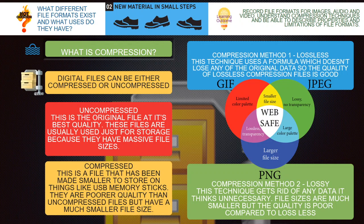Digital files can either be compressed or uncompressed. If it's uncompressed, this is the original file at its best quality. These files are usually used just for storage because they have massive file sizes — they're generally not used if the file is going to be put online, because it would take a long time to download. Compressed files have been made smaller to store on things like USB memory sticks or online — they are more manageable than uncompressed files but have a much smaller file size.